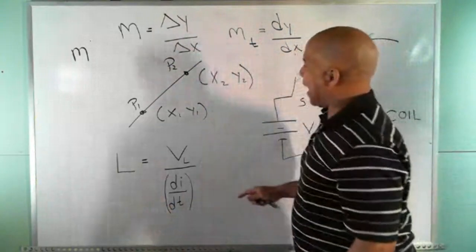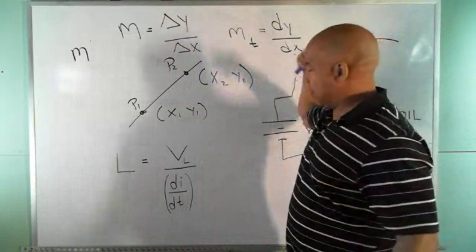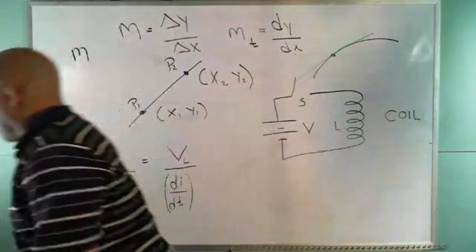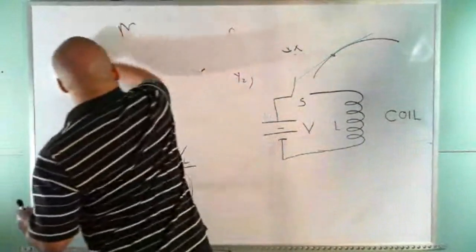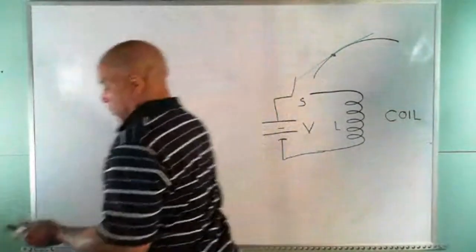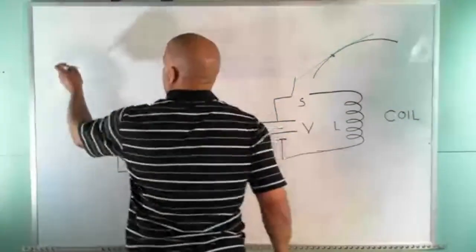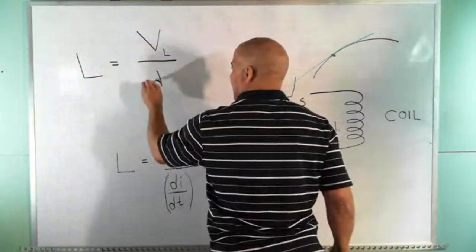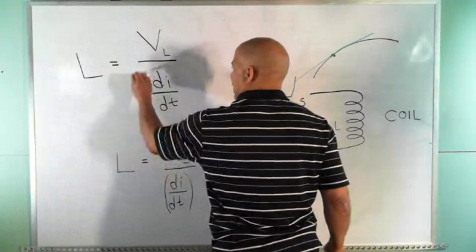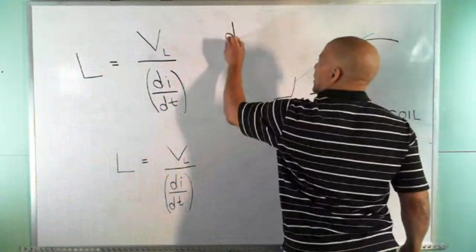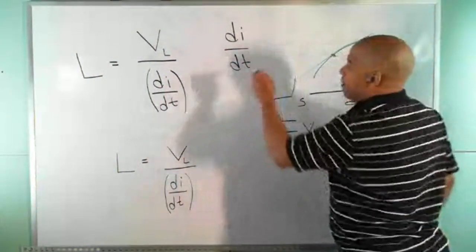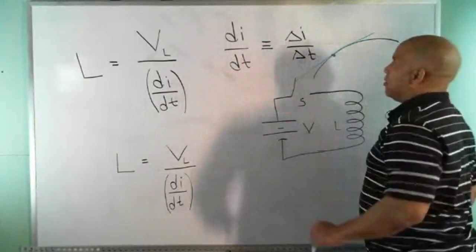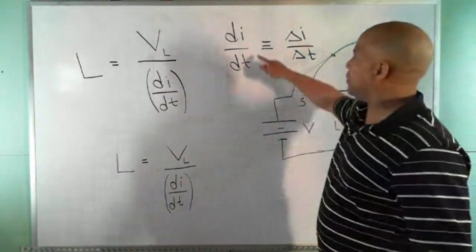You can think of delta and D as meaning the same thing here. If the notation bothers you, just substitute deltas for the D's. So the electrical formula for the inductor says L equals VL over di/dt, which you can also think of as L equals VL over delta-I over delta-T. Some books write it with deltas; if you take the calculus-based course, you'll see it with d's. Same thing.